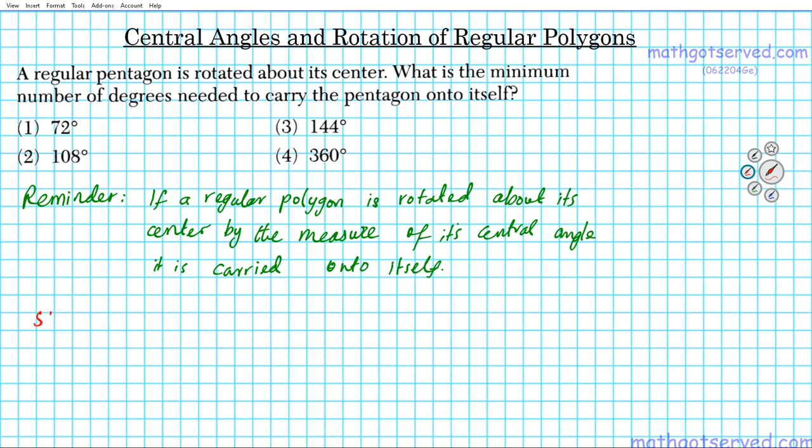The strategy that we're going to use is as follows. We're simply going to find the central angle of a regular polygon. Finding the central angle of a regular polygon will tell us the minimum number of degrees to rotate the pentagon to carry it onto itself. You could do it more. If you do it by multiples of the measure of a central angle, you still map it to itself.